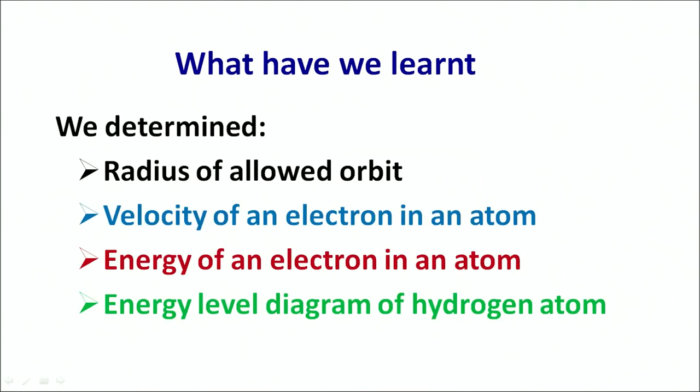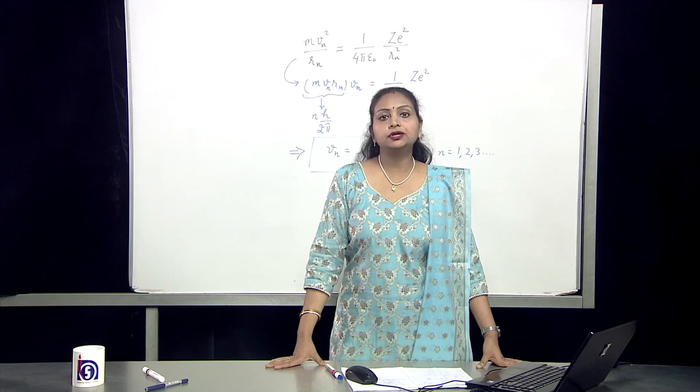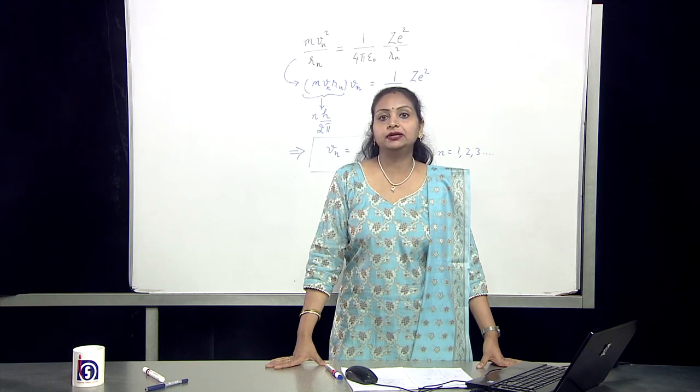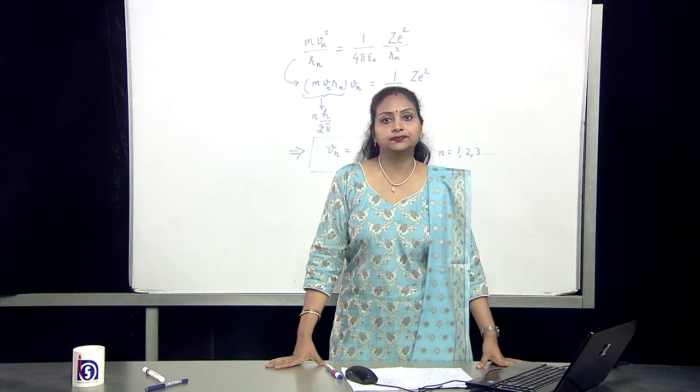So, what have we learnt in this lecture? We have determined the radius of allowed orbits, the velocity of electron in an atom, the energy of an electron in an atom, and studied the energy level diagram of hydrogen atom. Thank you.